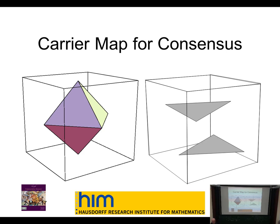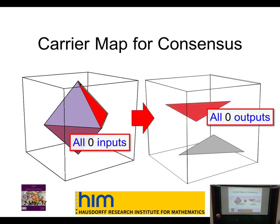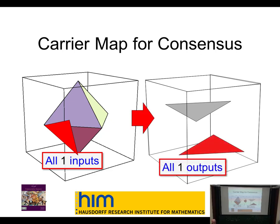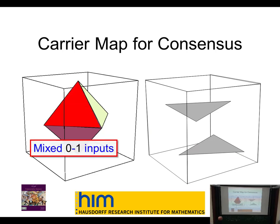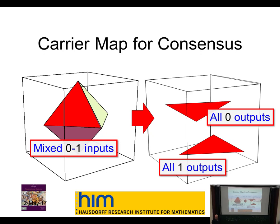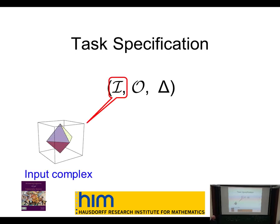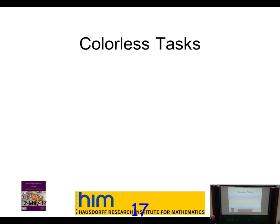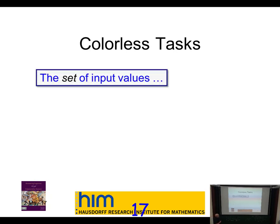Since we want to do consensus, there are only two possible output states: everybody decides zero or everybody decides one — two disconnected simplexes. It's not enough to specify inputs and outputs; you also need to say that if you start with all zeros then you must decide zero, and if you have all-one inputs you go to the all-one output. If you have mixed inputs you can decide either, but you have to agree. This special kind of map is called a carrier map, and a task specification is this triple: input, output, and the relation between them.